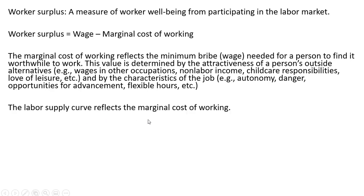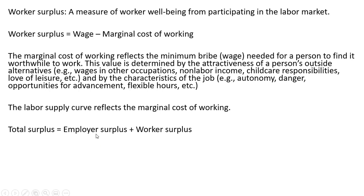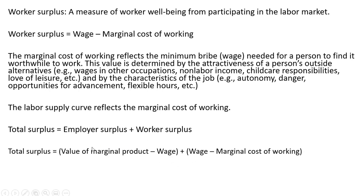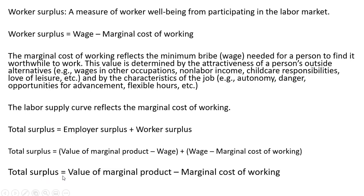The labor supply curve reflects the marginal cost of working. We can come up with a measure of total surplus by adding employer surplus to worker surplus. Employer surplus is the value of the marginal product of labor minus the wage, and worker surplus is the wage minus the marginal cost of working. The minus wage and plus wage cancel, giving us total surplus: the value of the marginal product of labor minus the marginal cost of working.